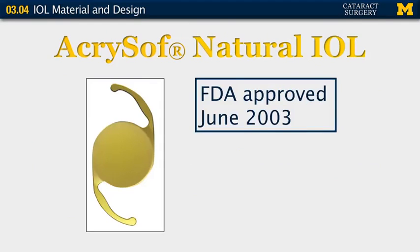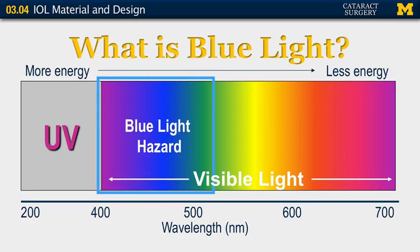Here at the University of Michigan Kellogg Eye Center, we primarily use the Alcon line of lenses. The Alcon AcrySof Natural lens imaged here was first approved for use by the FDA in June of 2003. You will note that it has a yellowish tint. The yellowish tint is intended to block out some of the blue light of the visible spectrum of light.